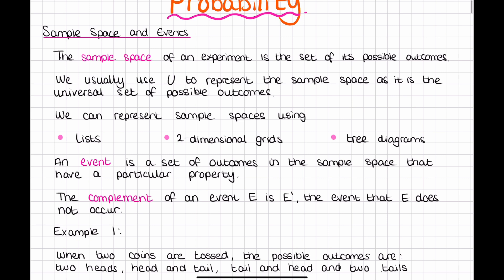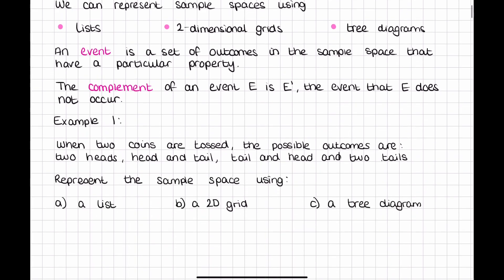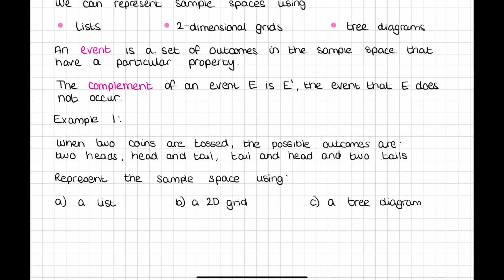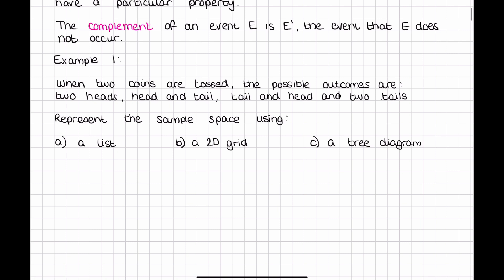First example: when two coins are tossed, the possible outcomes are two heads, a head and a tail, a tail and a head, and two tails. Now I want to represent the sample space using each of the things we said before: a list, a 2D grid, and a tree diagram.